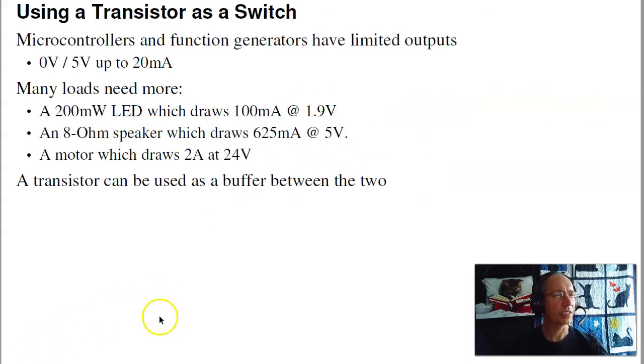Here's the idea. A lot of devices like microcontrollers, Arduinos, PIC processors, function generators are fairly wimpy. They can output voltages 0 to 5 volts, the function generators we have can do plus minus 10 volts, at only 20 milliamps. That's not enough to drive many devices. If I want those devices to drive a load such as an LED, speaker, or motor, I need a buffer. The transistor is a buffer that operates between the two.